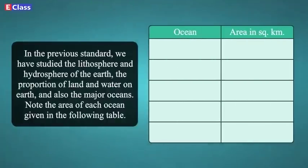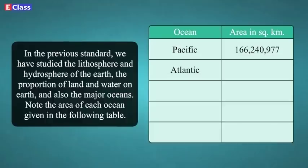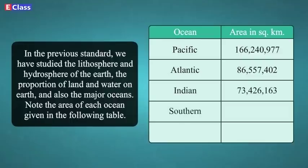Note the area of each ocean given in the following table. Pacific Ocean: 16 crores 62 lakhs 40,977 sq km; Atlantic Ocean: 8 crores 65 lakhs 57,402 sq km; Indian Ocean: 7 crores 34 lakhs 26,163 sq km; Southern Ocean: 2 crores 3 lakhs 27,000 sq km; Arctic Ocean: 1 crore 32 lakhs 24,479 sq km.